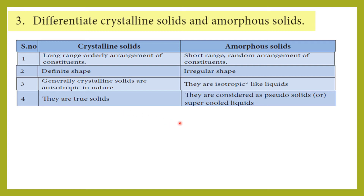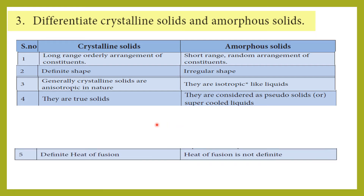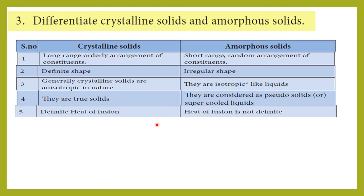Amorphous solids are isotropic — they have the same physical properties in different directions. Fourth point: crystalline solids are true solids, while amorphous solids are considered pseudo solids or super-cooled liquids. For example, glass is considered a liquid. Crystalline solids have a definite heat of fusion, whereas amorphous solids do not have a definite heat of fusion.